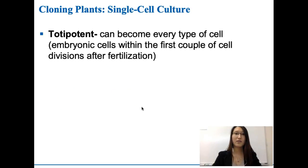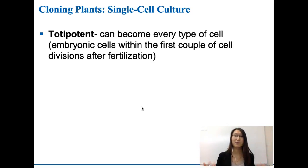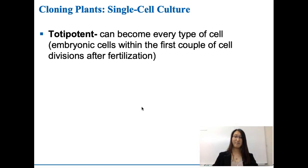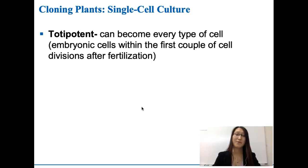Here are some words you should know. The first one is called totipotent — we call it potency. There are different types of potency, meaning different cells have different potentials for developing into other types of cells. Totipotent is talking about a cell that can become every single type of cell. This describes embryonic cells within the first couple of cell divisions after fertilization — they're not determined to be anything yet. They can become whatever part of your body they end up becoming. This is called totipotent — they really have all the potentials.